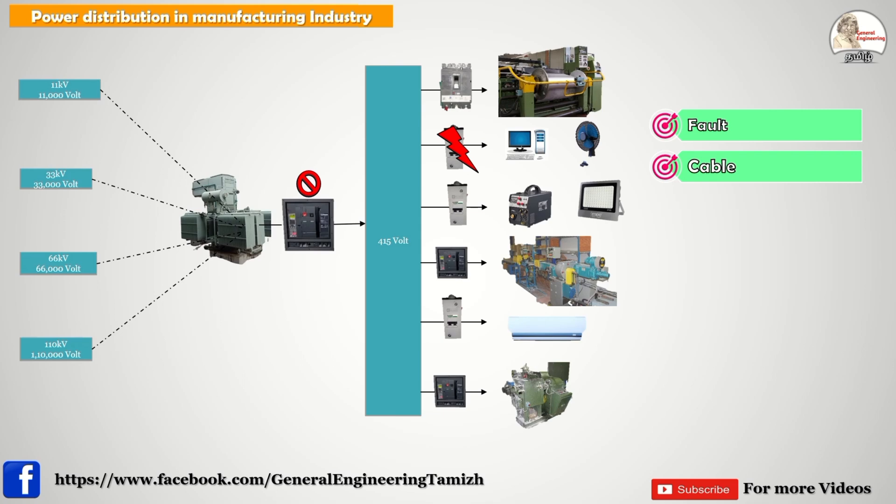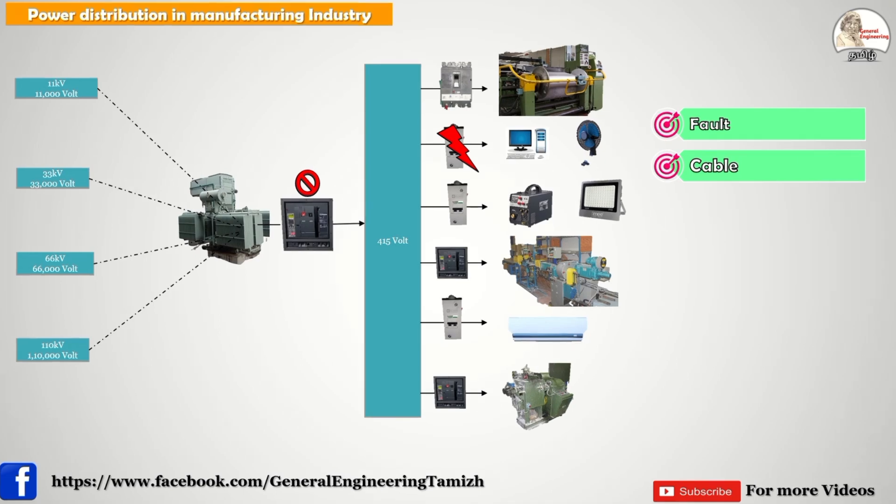The next scenario is cable size. Different rating equipments are connected in one panel, and based on the rating we have to choose the cable size, and based on the cable size we choose the proper bolts and lugs. If we use different sizes of bolts and lugs in one panel, it can create spark issues or heating issues and may lead to a serious fire incident. So this system is not good for us.